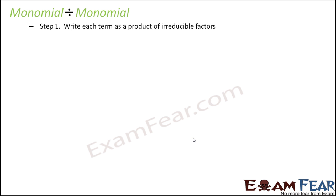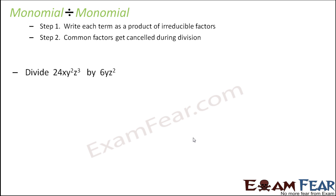We will start with the simple ones: monomial divided by monomial. A monomial is an algebraic expression with one term. Here are the steps we will follow with one example. The example we have taken is 24xy²z³ — a monomial — divided by 6yz², which is again a monomial.